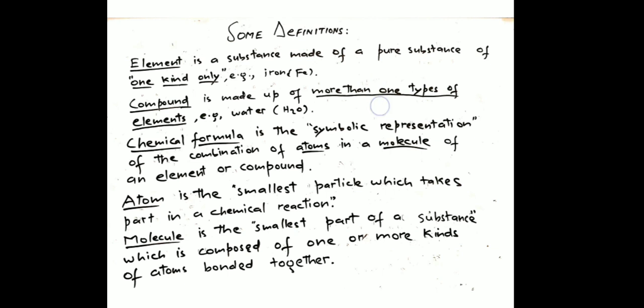A compound is a substance that has more than one type of element. For example, water is H2O — hydrogen and oxygen. A compound is made of two types of atoms. In water, there are two types of atoms: H and O. A chemical formula is a symbolic representation of atoms in a molecule. For example, water is H2O — two hydrogen atoms and one oxygen atom. This is a symbolic representation of the atom.